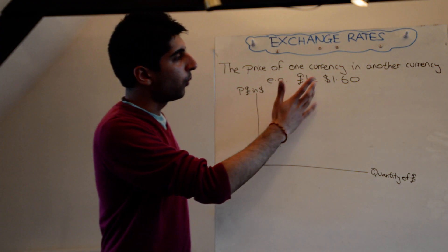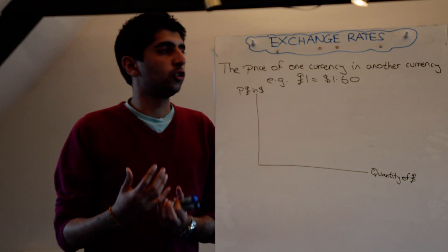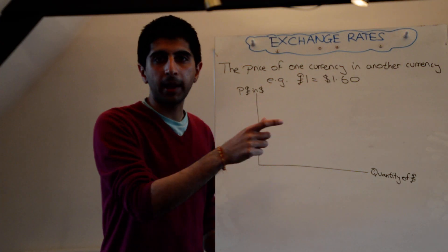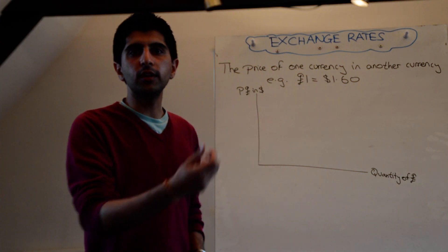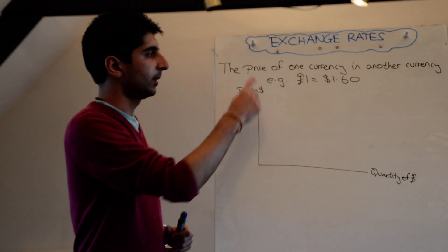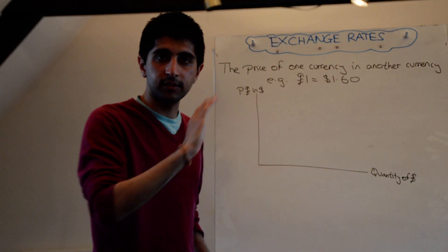For example, one pound might be equal to one dollar sixty. The price of one pound in terms of dollars is one dollar sixty. The price of one currency in another currency. Simple as that.